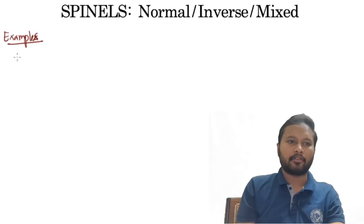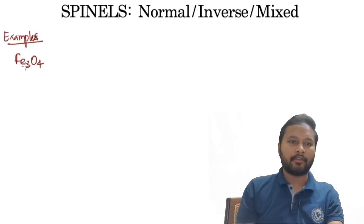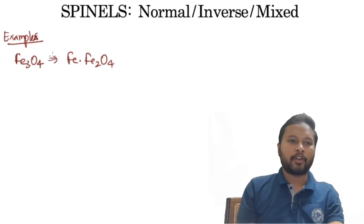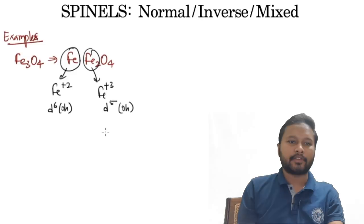Let's start with Fe₃O₄. This doesn't look like the AB₂X₄ formula, but you can rewrite it as Fe(Fe₂)O₄. One iron is present as a dipositive cation (Fe²⁺) and two irons are present as tripositive cations (Fe³⁺). Now calculate the CFSE: Fe²⁺ is a d6 system and Fe³⁺ is a d5 system, both in the octahedral field.